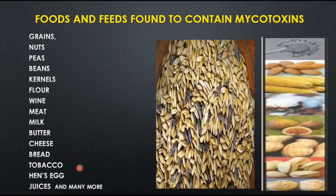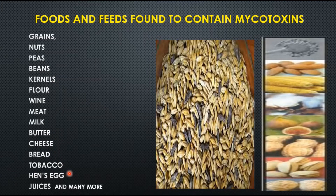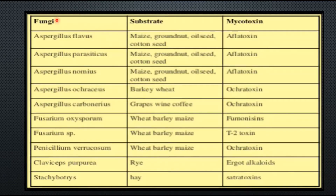A variety of foods and feeds are known to contain mycotoxins, including grains, nuts, peas, beans, kernels, flour, wine, meat, milk, butter, cheese, bread, tobacco, and juices, among many more. Here is a list of fungi alongside their substrates and the toxins they release.